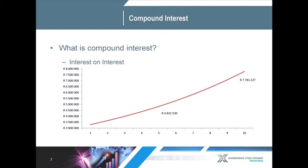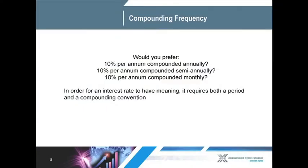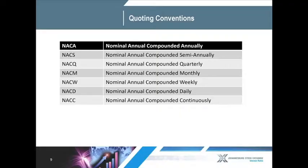We can now see that compounding — also known as interest on interest — is a fantastic thing. When you are quoted an interest rate by a financial institution, it will normally be an annual rate. It is important to note that at the same interest rate, more frequent compounding is preferable. This is illustrated by an example: the interest you earn is essentially money paid for work done. The quicker you are able to earn your pay, the sooner you are able to start working again. This slide shows the quoting conventions for various periods, with each nominal annual compounding convention listed.